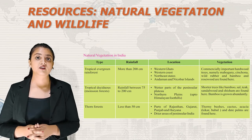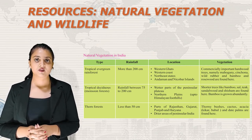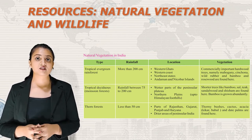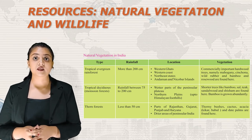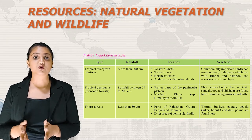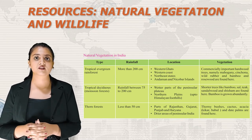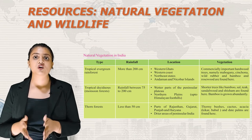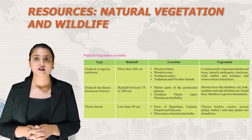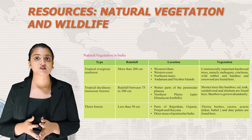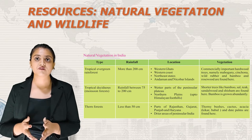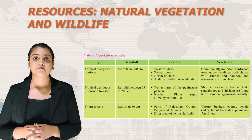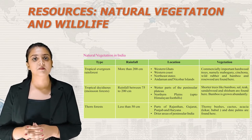Tropical Deciduous Forest, or Monsoon Forest, receives rainfall between 75 to 200 cm and is located in the wetter parts of the Peninsular Plateau and Northern Plains up to the Himalayan foothills. Vegetation found here includes shorter trees like bamboo, sal, teak, sandalwood and shisham. Bamboo is grown abundantly.